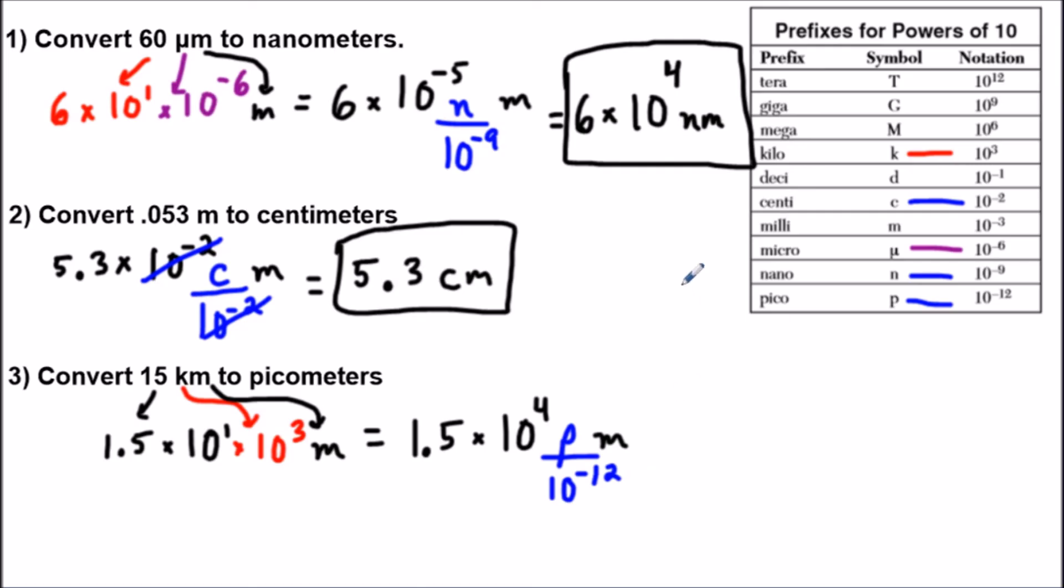And now the last thing we need to do is simplify. So I have 1.5 and 10 to the fourth divided by 10 to the negative 12 is 4 minus negative 12, which is 16, or 10 to the 16 I should say. So I have 1.5 times 10 to the 16 picometers for the last question.